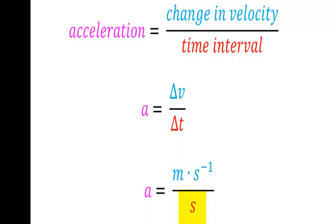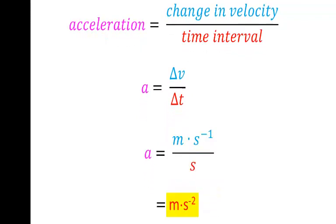Now we divide that by second, by time, and we get meters per second per second. Meters per second squared.